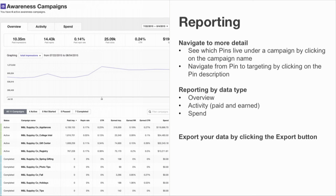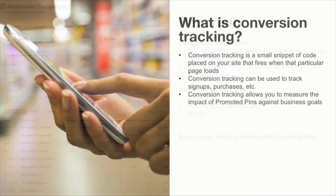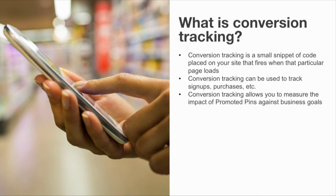In addition to the data in these three tabs, the export also contains conversion tracking data, if you have our conversion pixel installed. Our conversion pixel is a small snippet of code placed on your site that fires when a particular page loads. Conversion tracking can be used to track sign-ups, purchases, or other actions that you find valuable for your site and your business. Conversion tracking allows you to measure the impact of promoted pins against business goals — for example, how many sales did promoted pins drive last week?